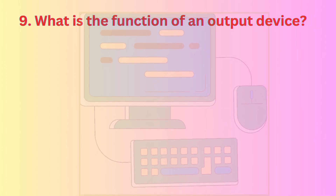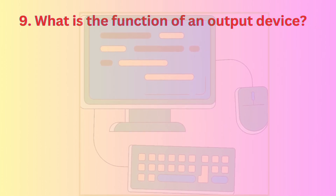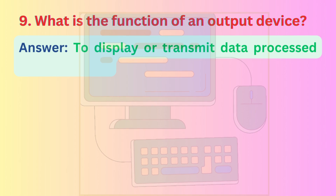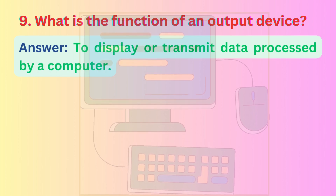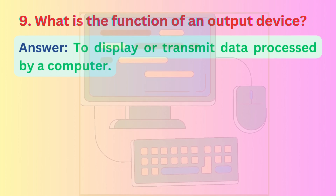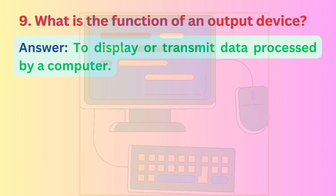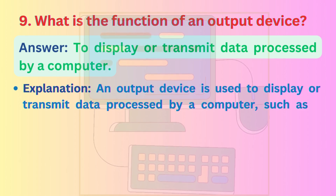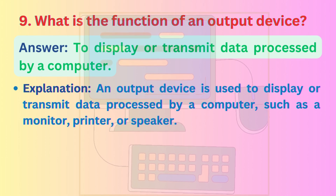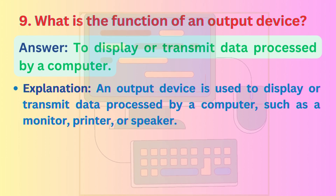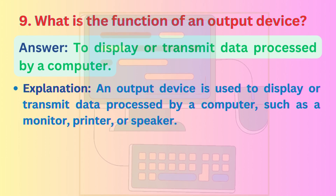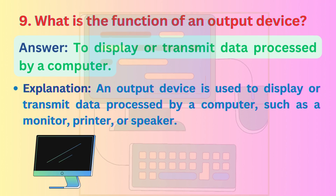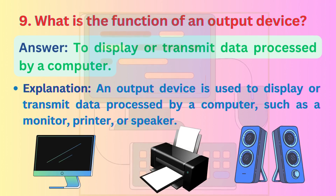Question 9: What is the function of an output device? Answer: To display or transmit data processed by a computer. Explanation: An output device is used to display or transmit data processed by a computer, such as a monitor, printer, or speaker.